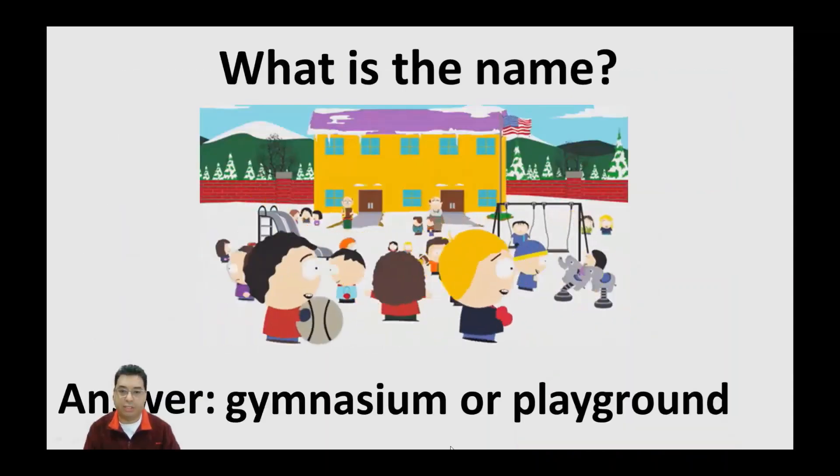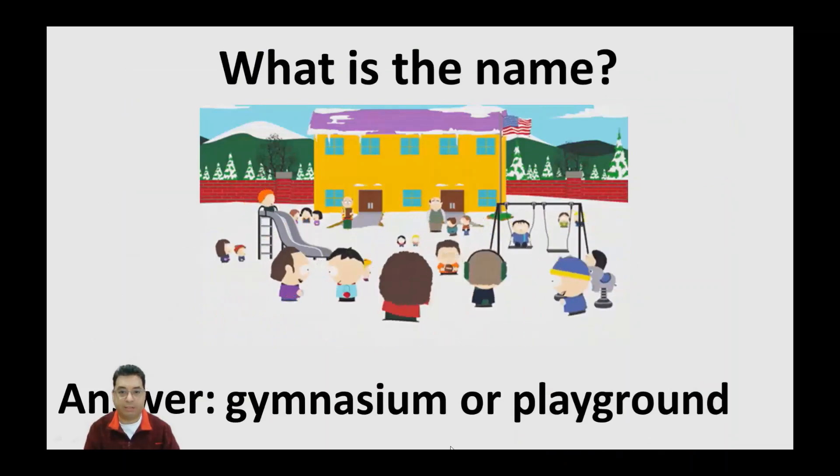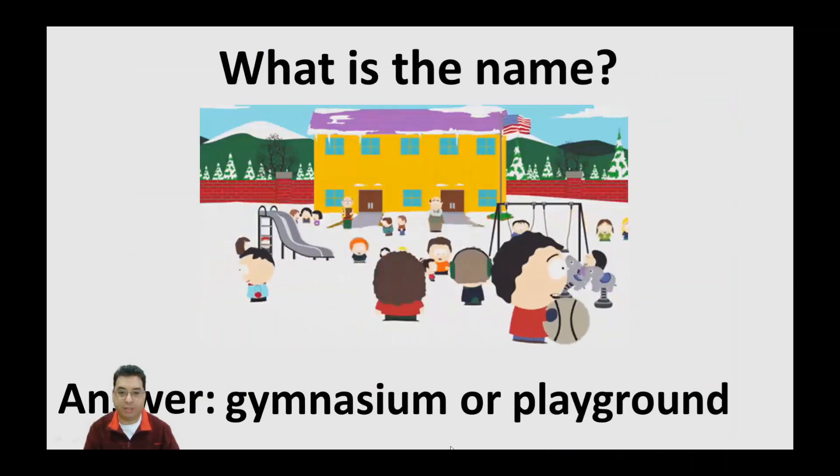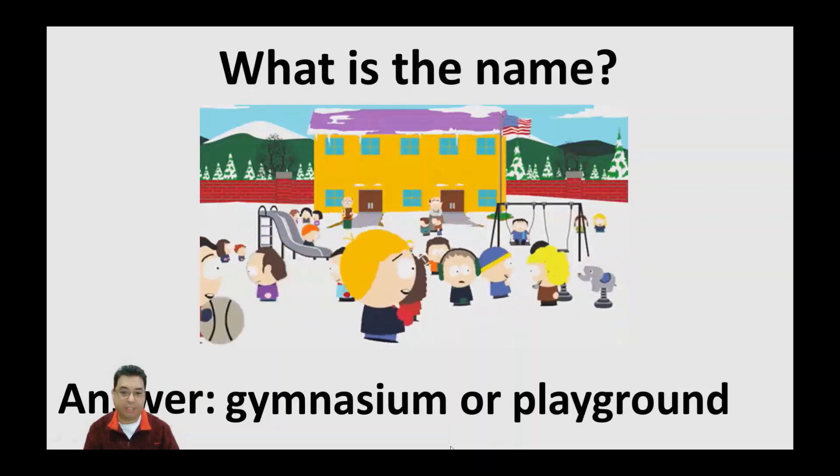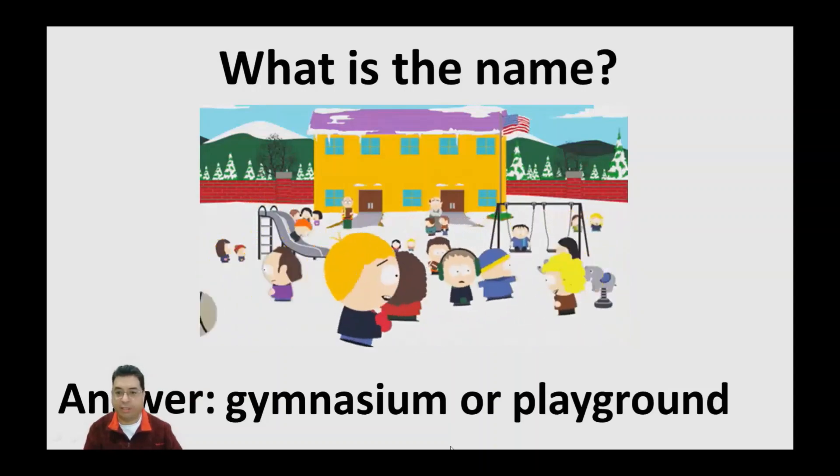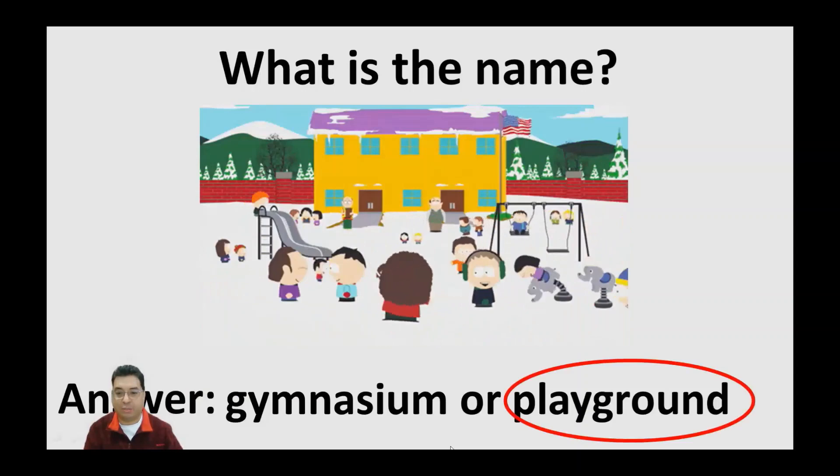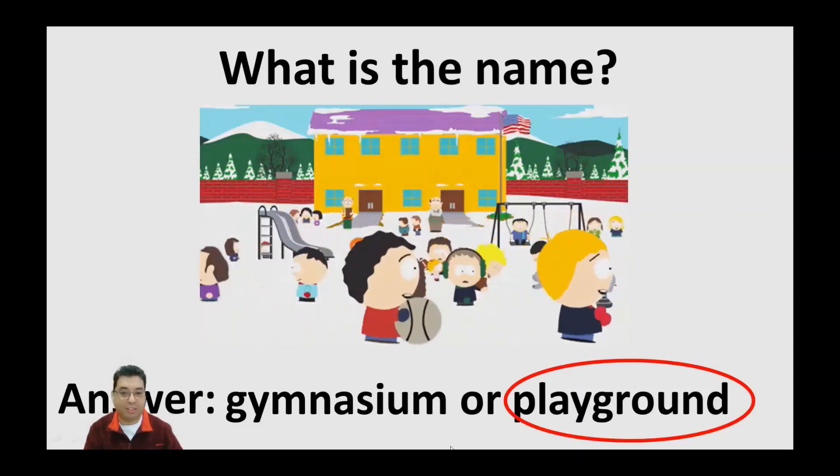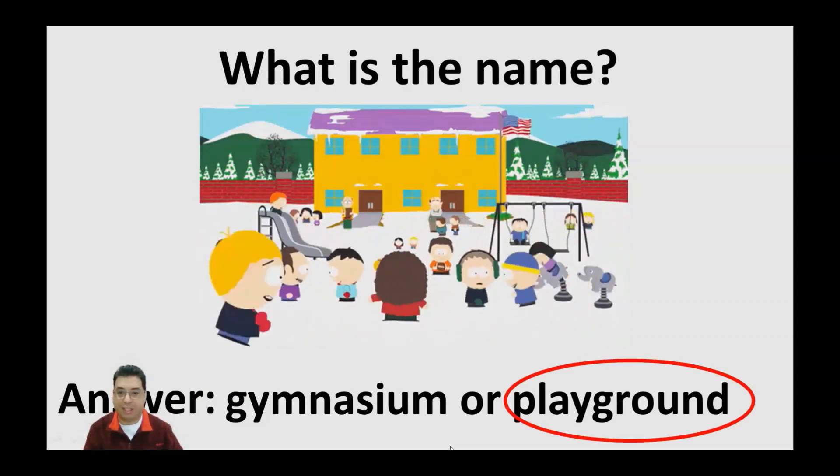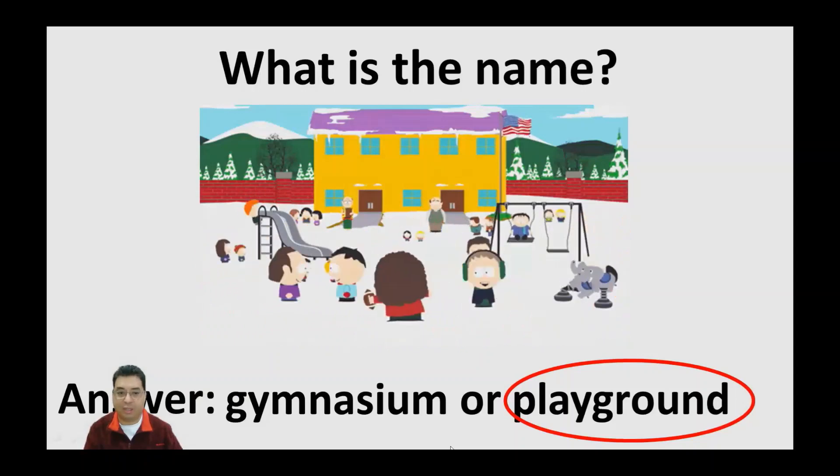So what is the name of this place? You have two choices here. Is it going to be gymnasium or playground? That's right. It's going to be a playground because you can see all the children there playing on the slide and on the swings and running around.